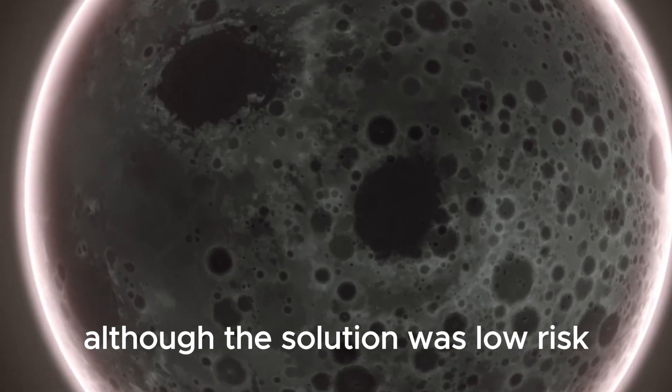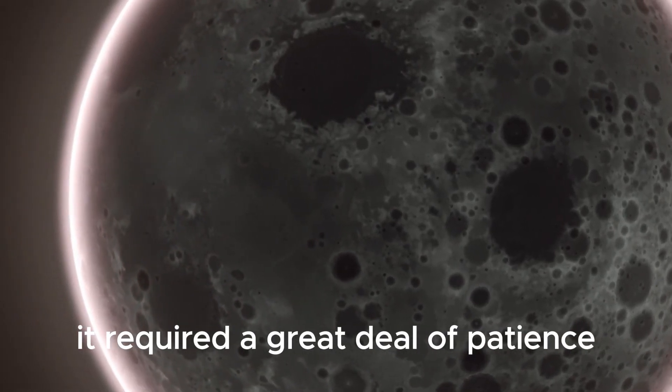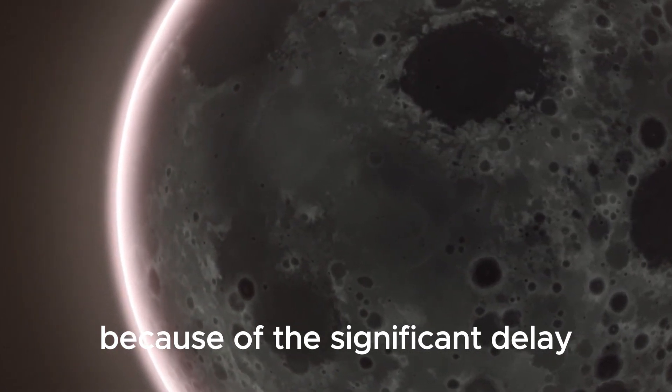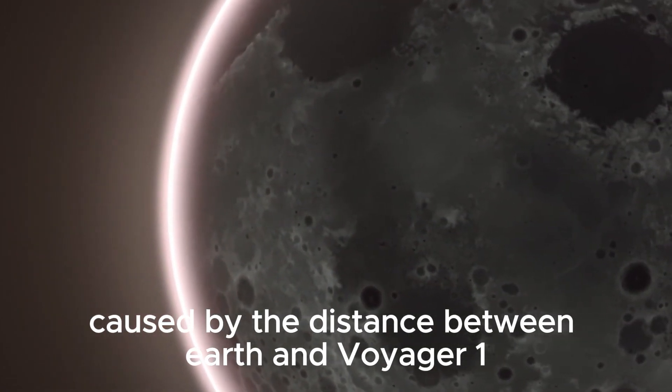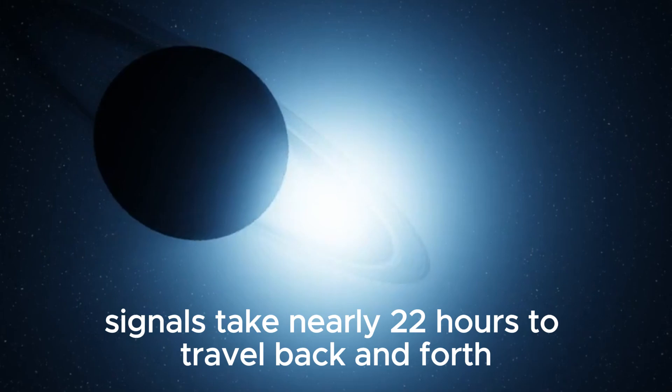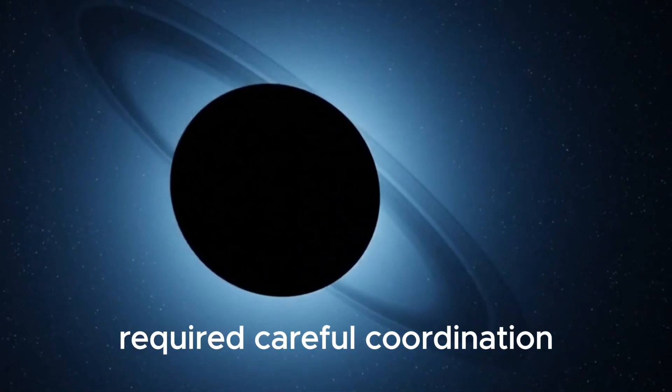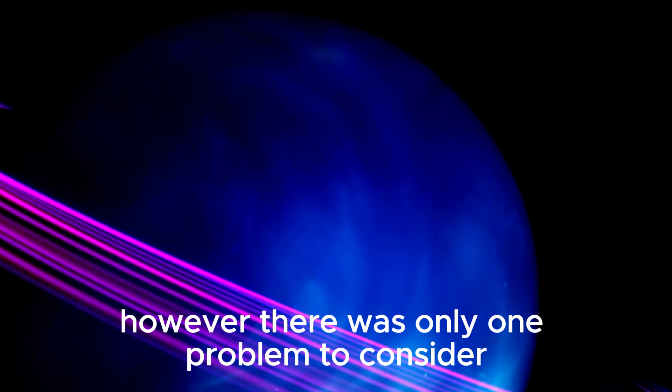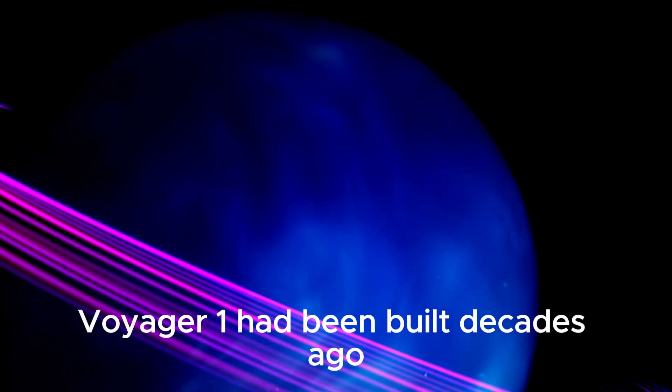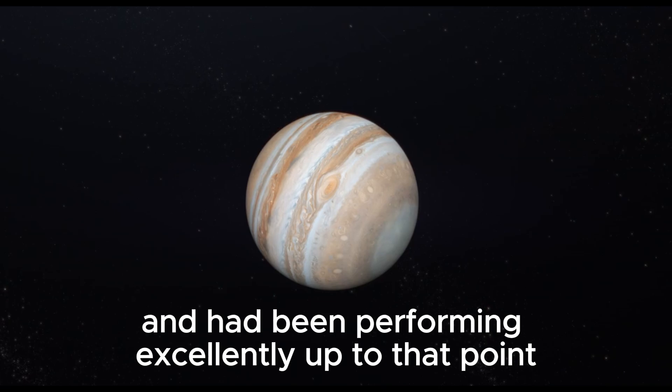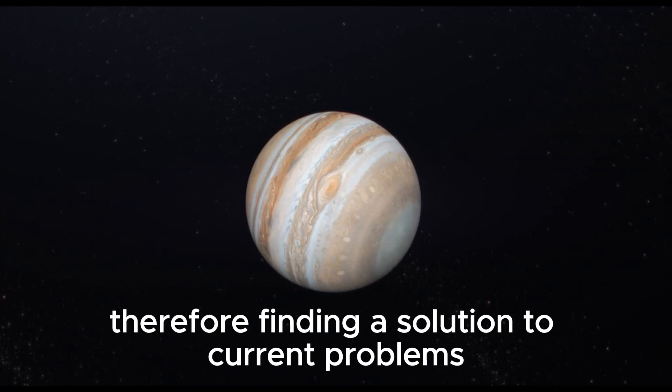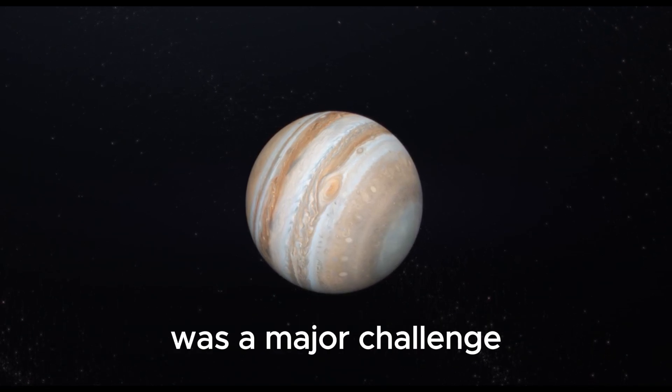Although the solution was low risk, it required a great deal of patience because of the significant delay caused by the distance between Earth and Voyager 1. Radio signals take nearly 22 hours to travel back and forth, so the troubleshooting process required careful coordination. However, there was only one problem to consider. Voyager 1 had been built decades ago and had been performing excellently up to that point. Therefore, finding a solution to current problems was a major challenge.